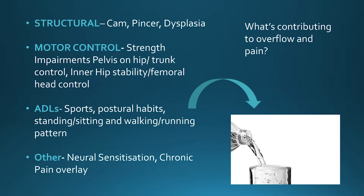One contributing factor is a structural problem such as CAM or pincer morphology or dysplasia. But there are plenty of people with these structural changes who are completely asymptomatic, so it's just a piece of the picture, not the whole bucket. Other contributing factors include deficits in strength, motor control, or functional control around the hip, pelvis, or trunk. Their activities of daily living may also contribute — are they a CrossFitter insisting on deep squats combined with CAM or pincer morphology, adding excessive compressive load? Are they sitting 12 hours a day? Finally, things like chronic pain or neural sensitisation may need a pain education approach to help them manage their symptoms.